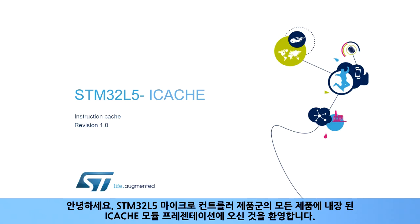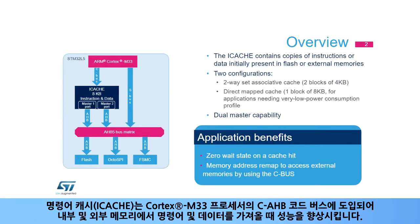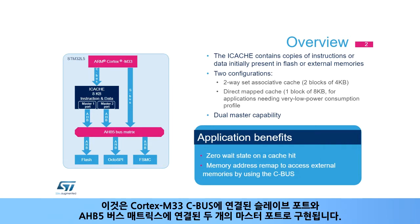Hello and welcome to this presentation of the iCache module, which is embedded in all products of the STM32L5 microcontroller family. The instruction cache, or iCache, is introduced on the C-AHB code bus of the Cortex-M33 processor to improve performance when fetching instructions and data from both internal and external memories. It implements a slave port connected to the Cortex-M33 C bus and two master ports connected to the AHB5 bus matrix.